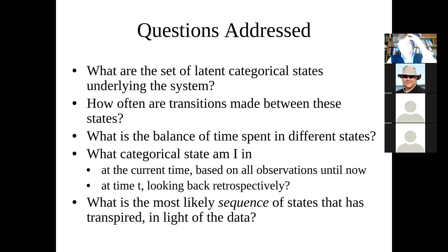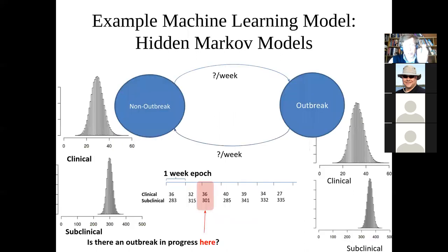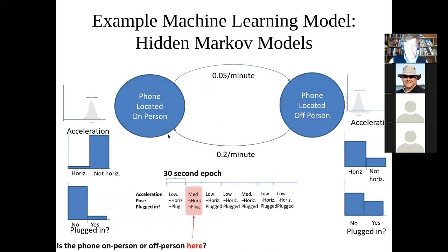You can use this method to go beyond assessing the current state to ask: what are the sets of states underlying the system? How often are transitions made between states? How much time is spent in different states — say, with major depressive disorder? What's the most likely sequence of states that's applied until now? These are all things we can find out.